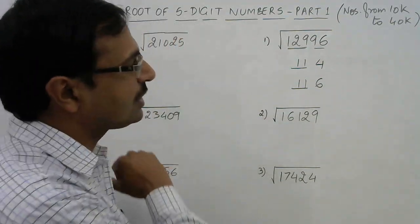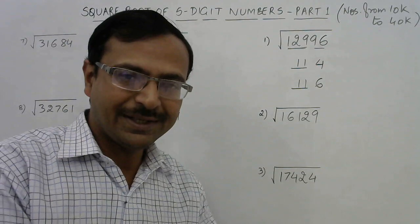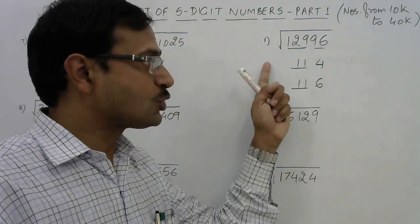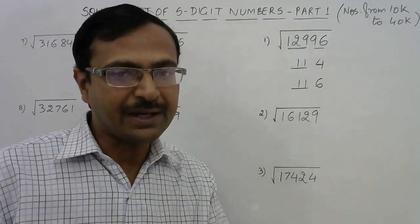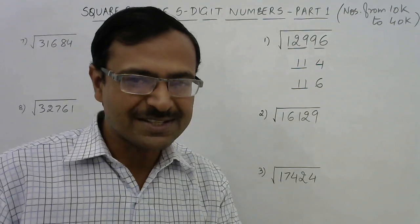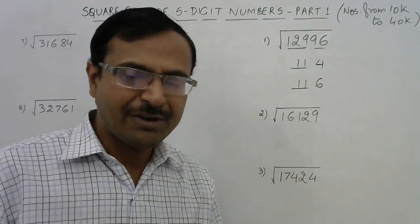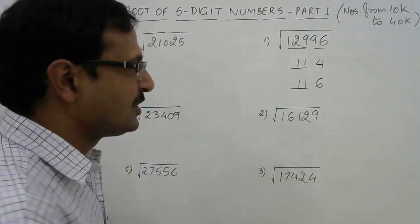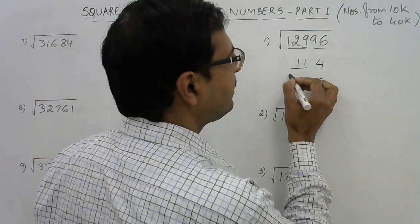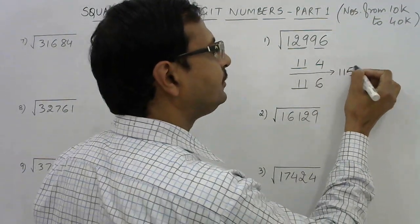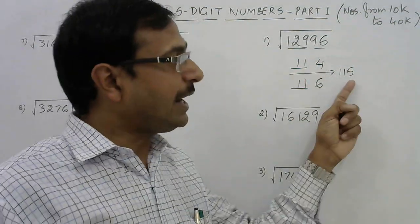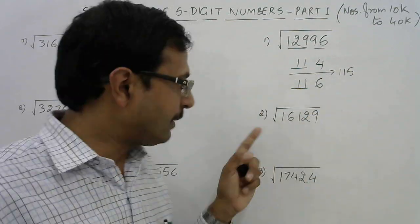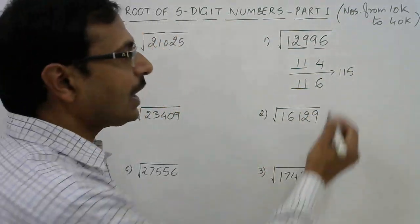So how much time are you going to take to get these two options? I think 3 to 4 seconds, and in the next step you will have your answer. We will have to choose between 114 and 116. For that you need to know one more concept of squaring — the very famous trick of finding the squares of numbers ending with 5. In between 114 and 116 we have 115. Always take the middle number ending with 5.